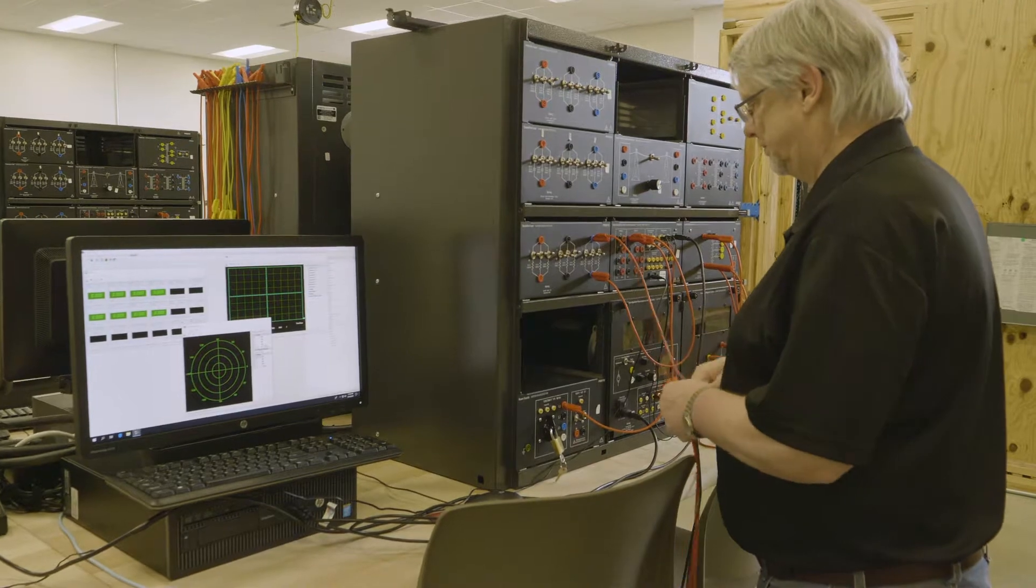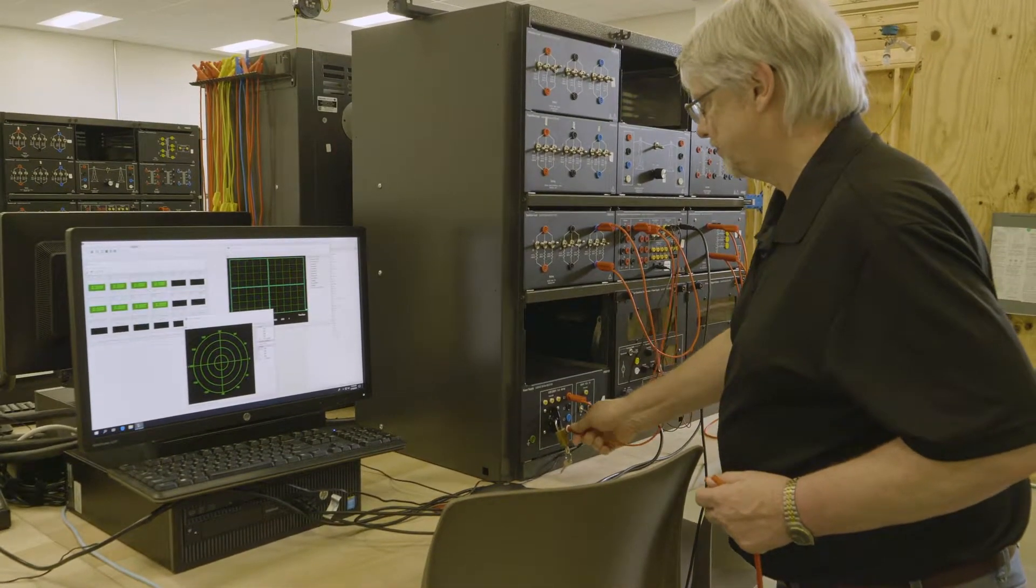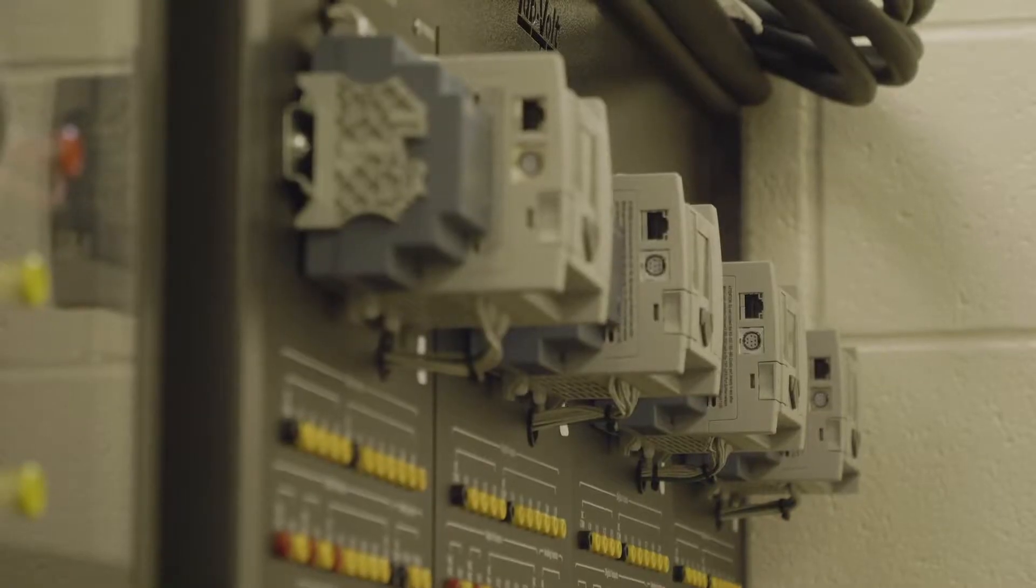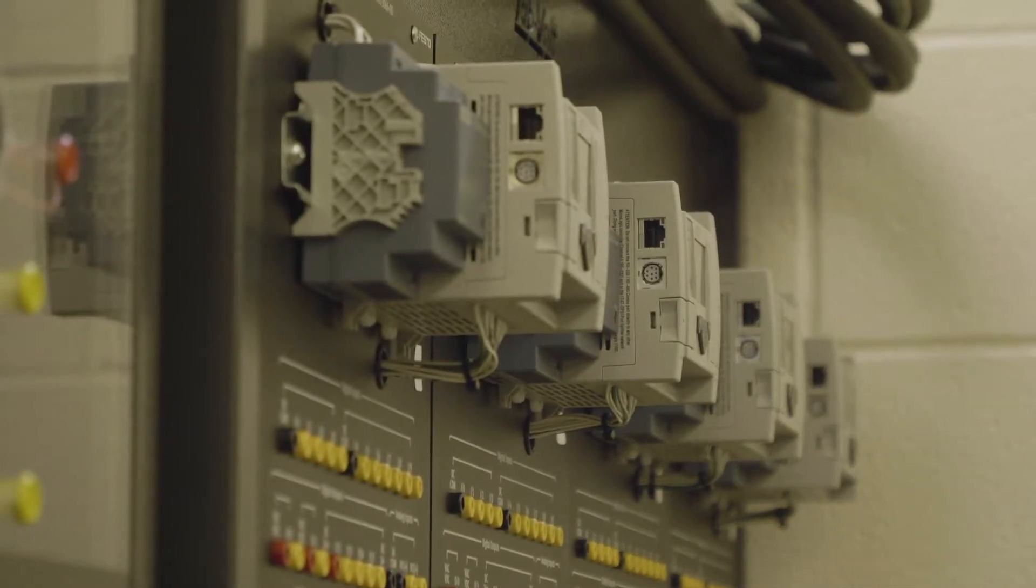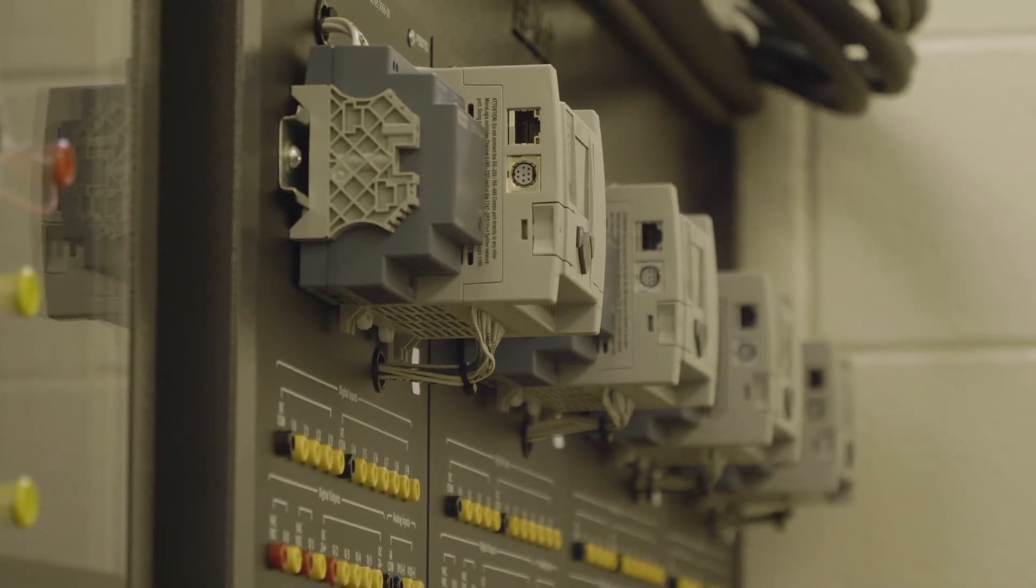The program starts out with what we call a level one certification, which is commercial and residential, and then a level two certification, which is commercial and industrial. If you add five academic courses, you can be issued an associate's applied science degree as an electrical technician.